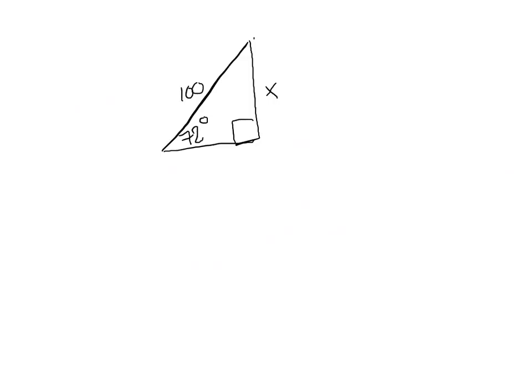On this word problem, you'll have to build your own triangle — here I've already built it. The big thing is to identify what you have and what you're looking for. I've got the opposite side and the hypotenuse, so that's sine. I write sine of 72 degrees equals opposite x over hypotenuse 100. I multiply both sides by 100, use my calculator in degrees mode, and get x equals 95.1.